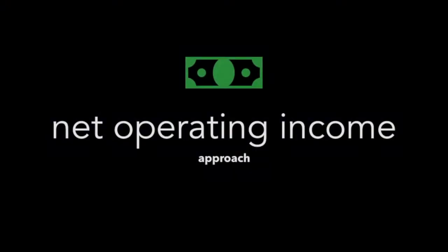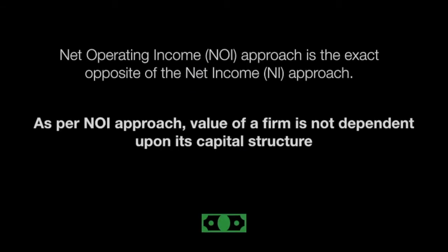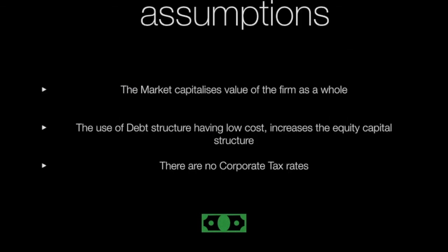So without any further ado, let's jump into that. The net operating income approach can be simply defined as the approach where the value of a firm is not dependent upon its capital structure. This approach believes the debt to equity ratio does not affect the overall cost, and there is no optimum ratio of debt to equity — any ratio taken is considered the optimum ratio. The market capitalizes the value of the firm as a whole, meaning the split between debt and equity is irrelevant. Additionally, the use of debt having low cost increases the equity capital structure, and no corporate taxes are assumed in this method.